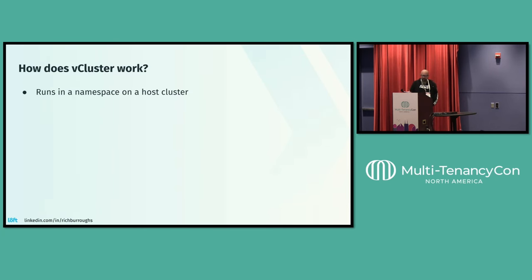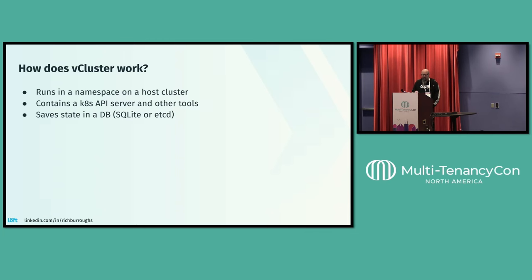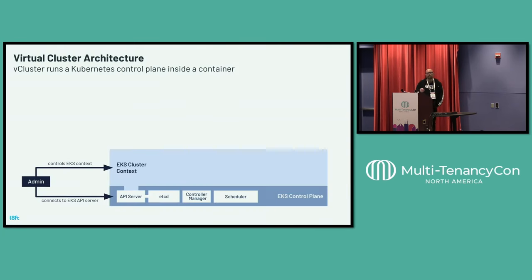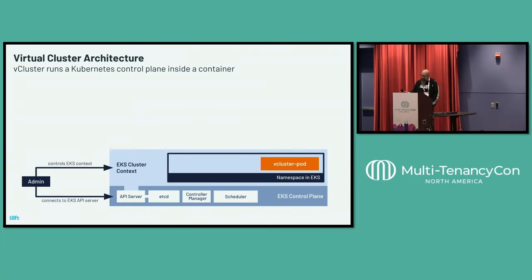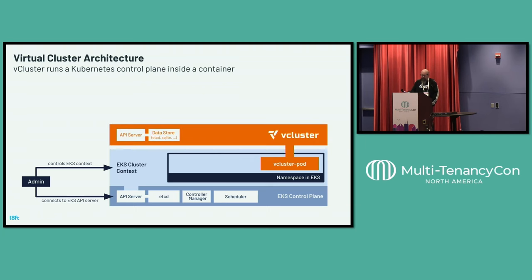So, how does it work? It runs in a namespace on a host cluster. It contains a Kubernetes API server and some other tools, and it saves its state in a database — that's SQLite by default, but you can point it at etcd or even Postgres or MySQL. Here's a quick look at the architecture. We've got our underlying host cluster — it's an EKS cluster in this example, but it could be any Kubernetes cluster. The admin of the cluster controls its context, but we can create a namespace in there and have vCluster inside of that. vCluster has the API server and the data store.